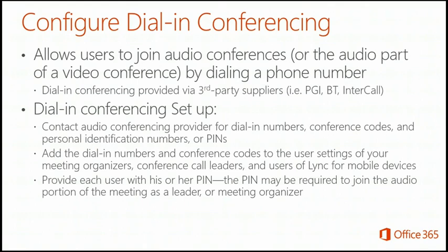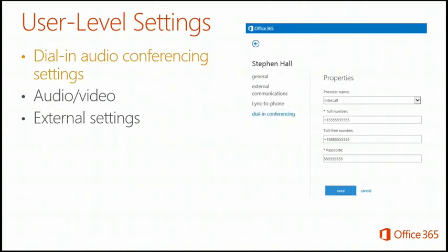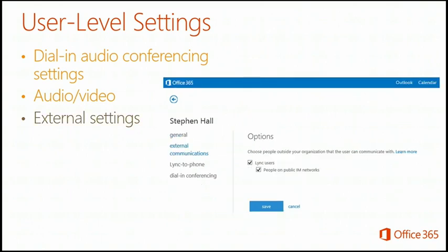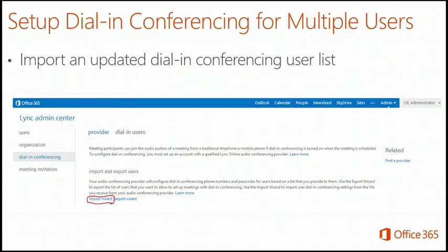Configuring dial-in conferencing: there are currently three providers. You're able to set a dial-in number, a toll-free dial-in number, as well as a PIN code for people to join your meeting. There is a cost per minute for that, just like any other conferencing solution. The slides have step-by-step breakdowns of what each step looks like. On the right side of the screen where it says Related — Find a Provider — that will take you to the current list of available providers, and you can always check there within the portal.